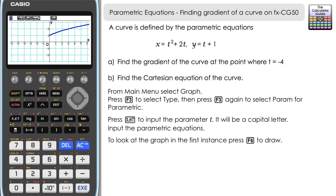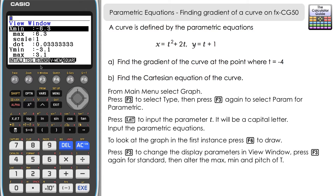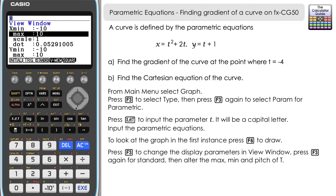We're going to change the display parameters for the graph. Press F3 for V-Window (view window), then F3 once more for a standard layout for the axes. You can change the x minimum using the navigation button. There's a very important parameter we also need to change: the minimum and maximum for our t value.